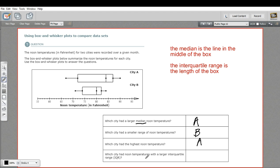And finally, it says, which city had noon temperatures with a larger interquartile range? That means which one had the larger box part of your box and whisker. And that again is city A. It's got the largest range and the largest interquartile range. So that is a little bit of work with box and whisker plots.